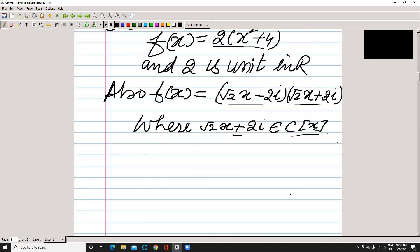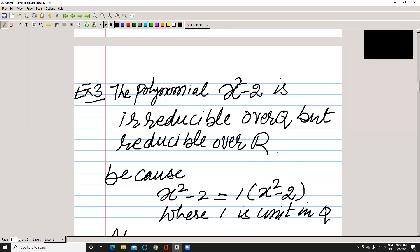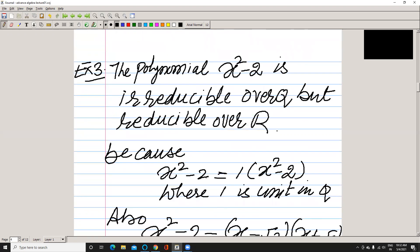Take another example, the polynomial x² - 2. It is irreducible over Q but reducible over R. Why? Because we simply write x² - 2 in this form over Q, and clearly 1 is a unit, so it is irreducible over Q.